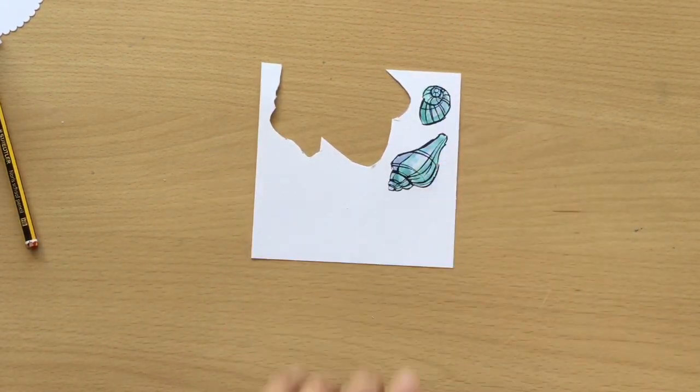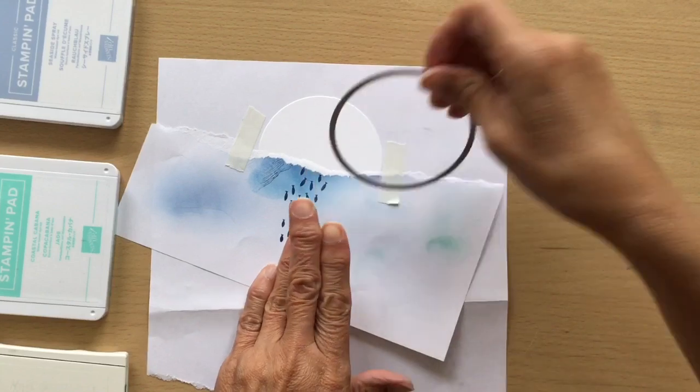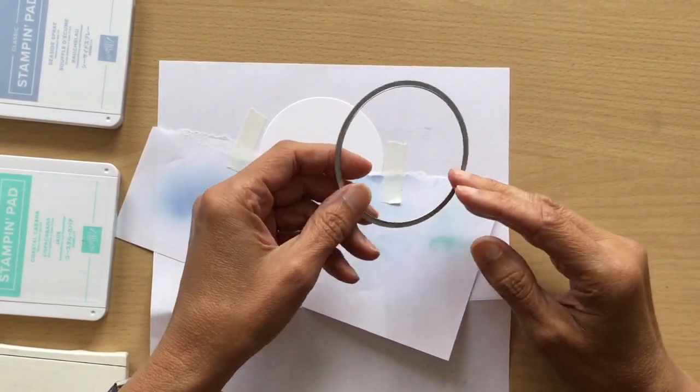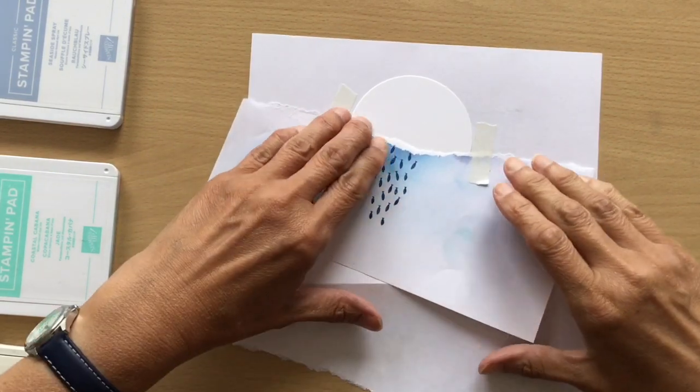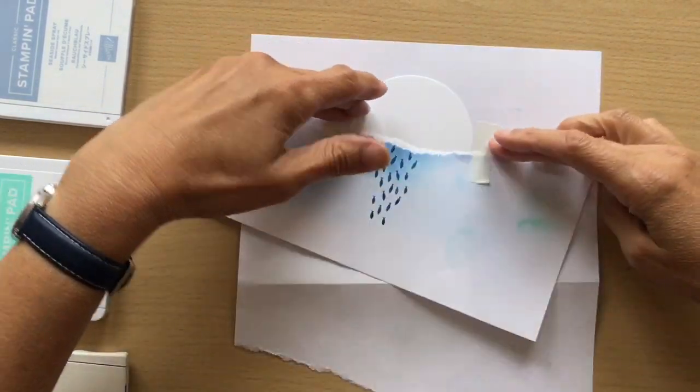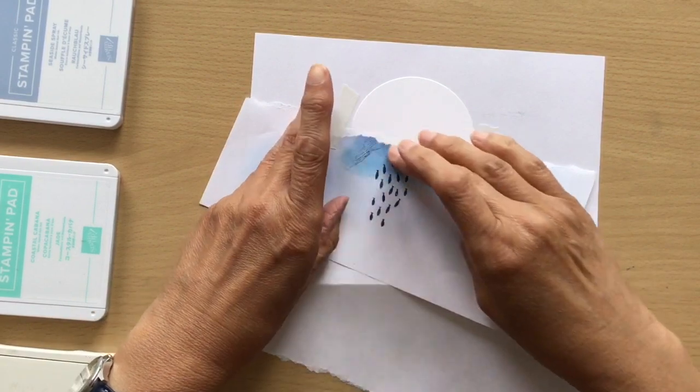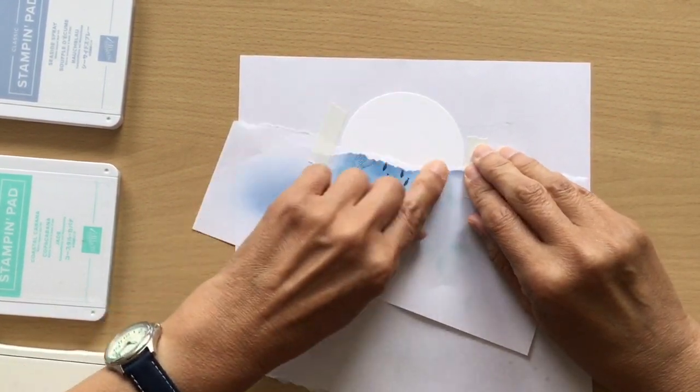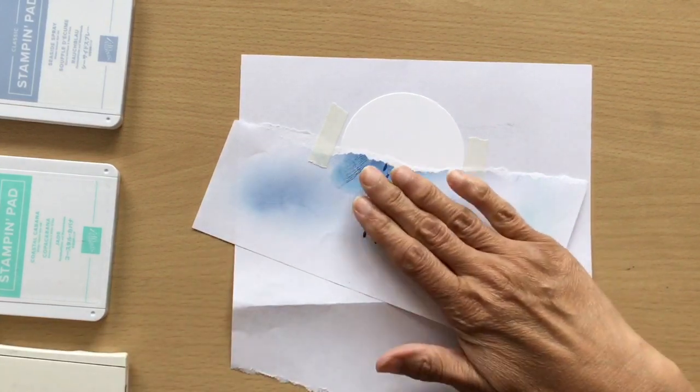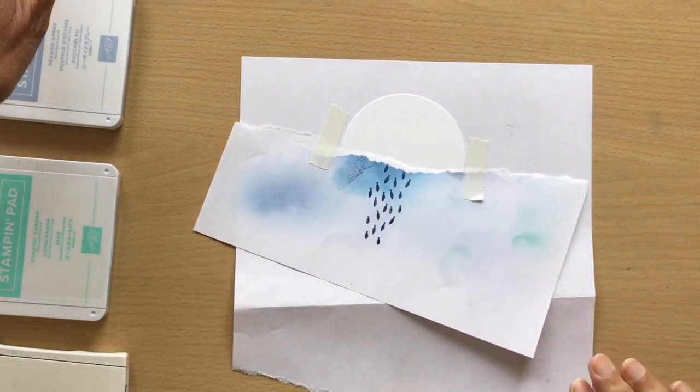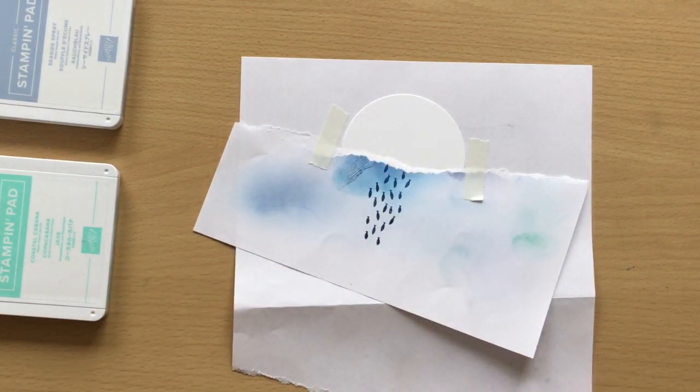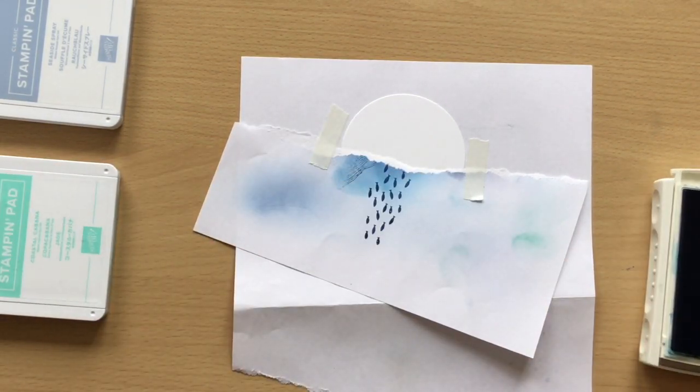I have here a piece of Whisper White that I've cut with my largest layering circle die and I have put a piece of paper that I've ripped - so this is going to be my beach - and I've just stuck that on. I've not stuck my Whisper White down, I've just stuck this little mask down and I'm going to start with Pacific Point. I'm going to make some sea.